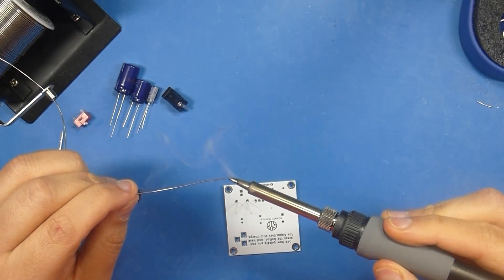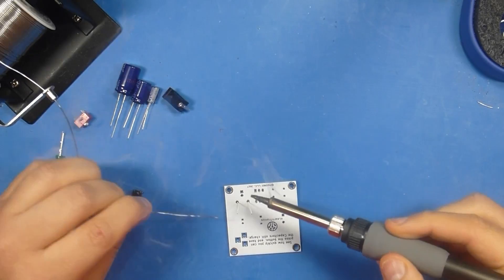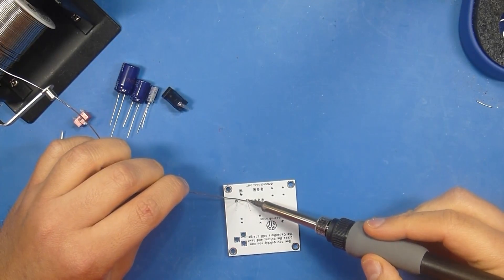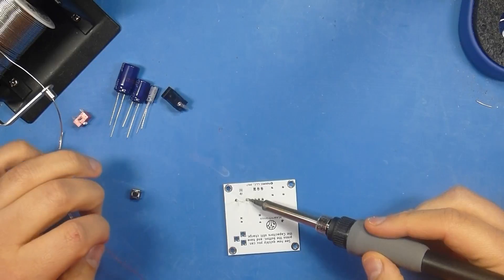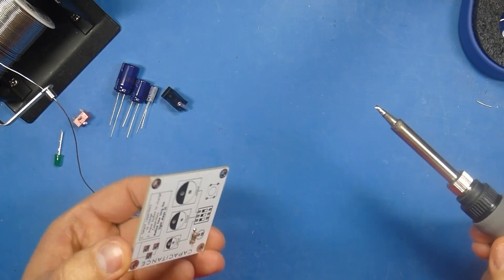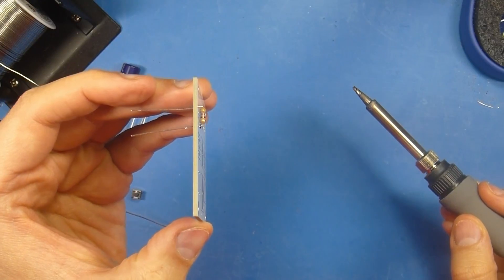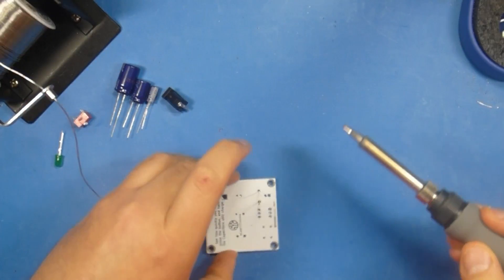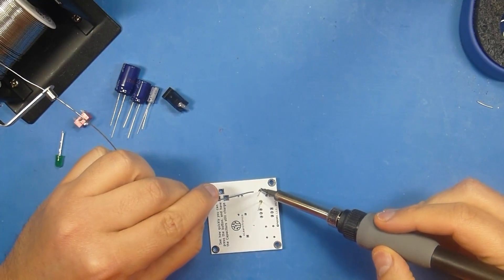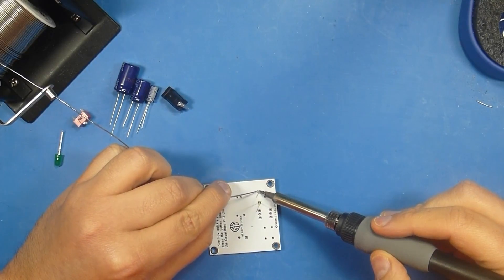We're going to go ahead and tin our tip. Now you want to be in a well ventilated area or ideally have a fume extractor because you don't want to breathe this stuff in. So we're just going to tack down one point to make sure that it's sitting flush on the board. This one looks pretty good. So I'm just going to do the other point.